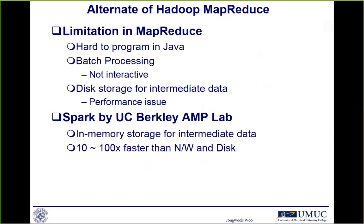Let's take a look at Spark core. A question from the tutorial was: what is the limitation in Hadoop MapReduce? Many of you answered that if you write Hadoop Java code in MapReduce, it's really hard. Also, it is for batch processing — it's not interactive. And because of intermediate data generated from map tasks, that data must be stored into hard disk or SSD and the reducer needs to read it. So there is a data access bottleneck.